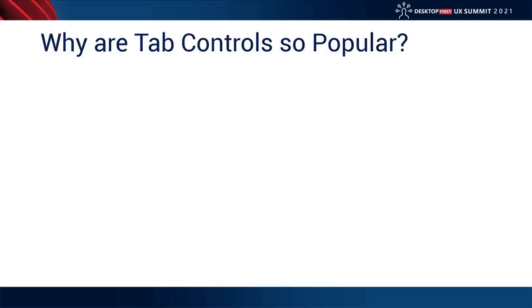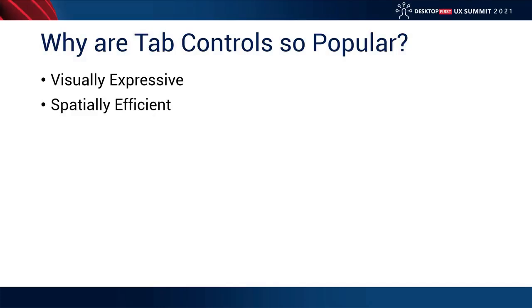So, why are tab controls so popular? There are three main reasons. First, they're extremely visually expressive. They convey what they do and what their purpose and intent is very concretely. Almost instantaneously, a user can see it and have an understanding of how it should work. They're also extremely spatially efficient, meaning that for a small amount of screen real estate, we can group content together in a more logical way, isolating it appropriately to convey information and guide our users. We have a really big bang for our buck with respect to the pixels we use on the screen.